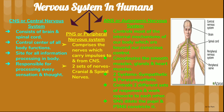The nervous system in humans is divided into three parts. First is CNS, that is the central nervous system. Second is PNS, that is the peripheral nervous system, and ANS, that is the autonomic nervous system.